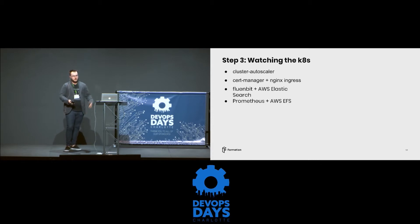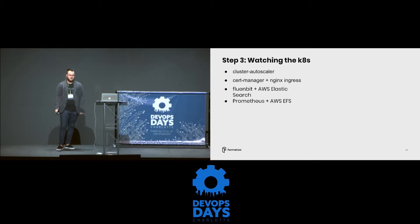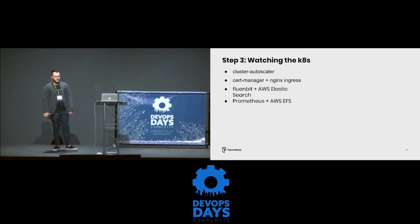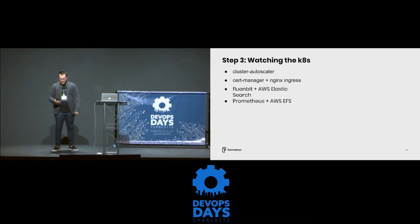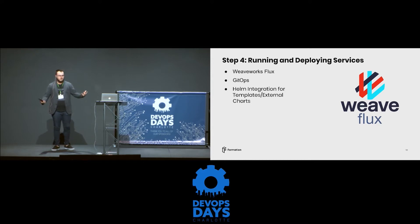Cluster Autoscaler is an open source tool that makes your cluster autoscale. We use cert-manager with Nginx Ingress so we don't have to worry about SSL certs. We utilize FluentBit for grabbing extra metadata from the Kubernetes cluster for our logs, and Amazon's Managed Elasticsearch for storage, since storage in Kubernetes is more challenging than we want to deal with. We also use Prometheus with Amazon EFS, since EBS backup wasn't an option when we looked at this two months ago.